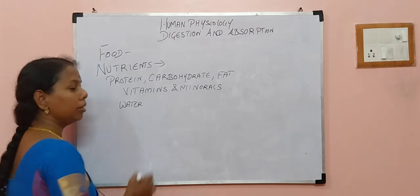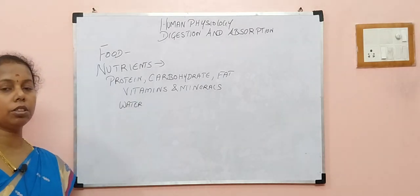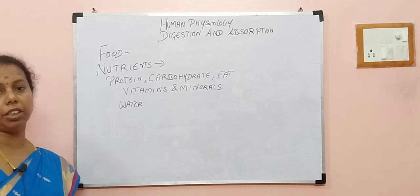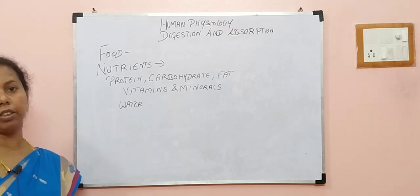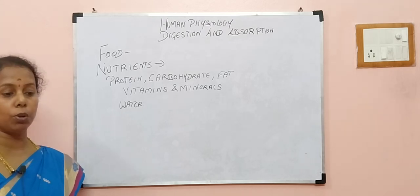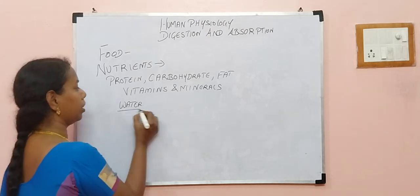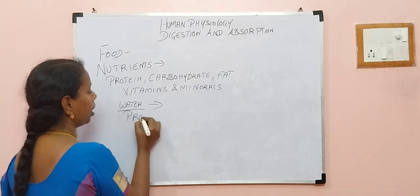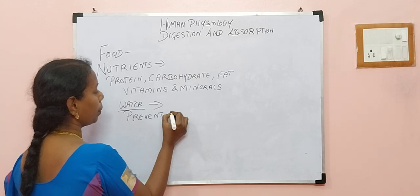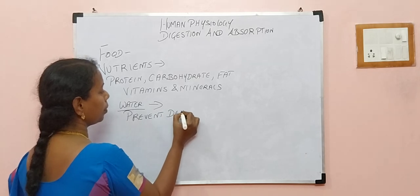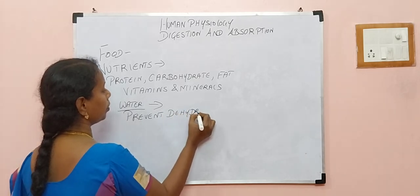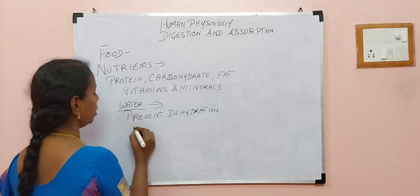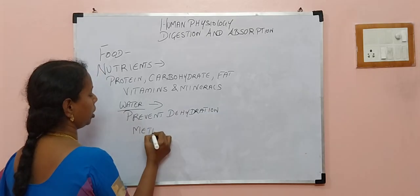Children, they may ask you: among these nutrients, which may prevent dehydration and helps in metabolic activity? It is water which prevents dehydration and also helps in metabolic activity.